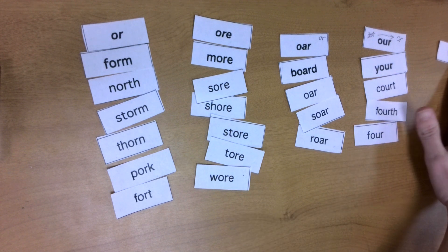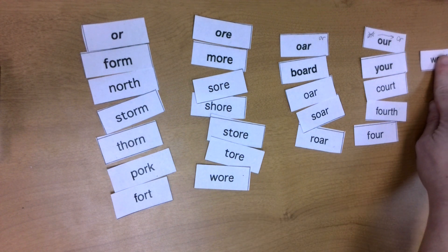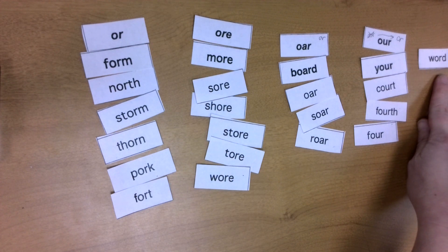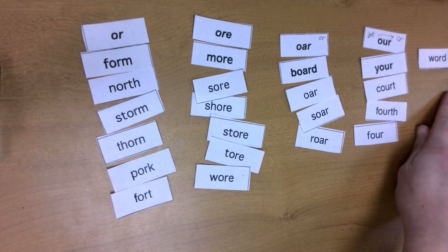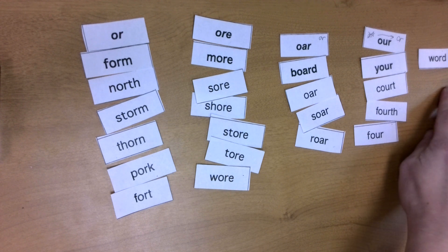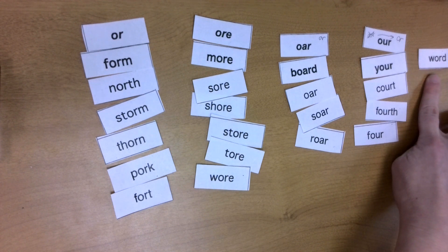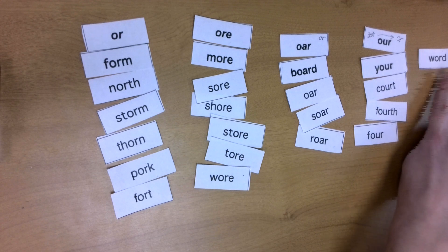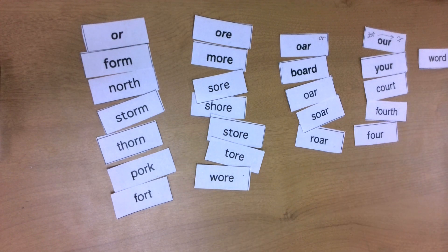The next word is WORD. Tap that out with me. That doesn't match any of our OR patterns, so I'm going to stick this over here in an oddball category. Any R-controlled syllable type can also make that 'ur' sound, which is what makes R-controlled syllable types so tricky.